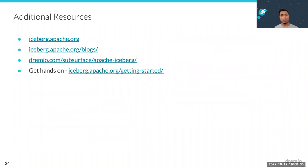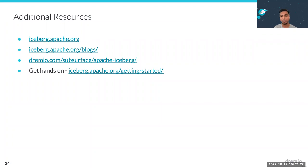Rich schema evolution support means you can evolve schemas without rewriting the entire table, and all engines see those changes immediately. Every engine goes to the catalog for the current metadata pointer, so no matter what engine you're using — Spark for processing, Flink for streaming, some ML tool — they all see the same data. This is what makes the lakehouse architecture future-proof: your data is in an open format, you're not locked into a particular vendor's warehouse, storage, or execution engine, and any new tool you bring in can access that data.